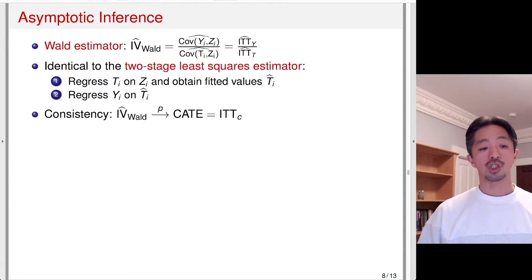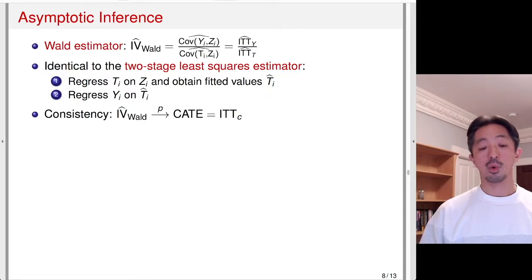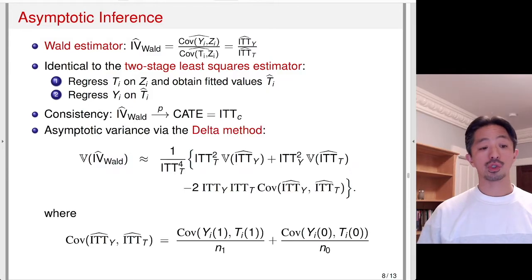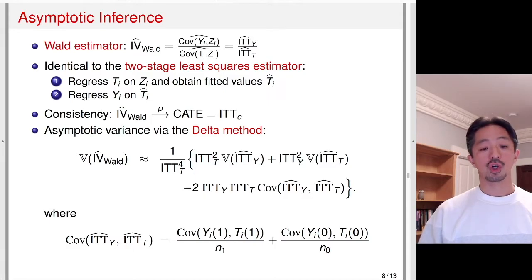We can show that this IV estimator — the Wald estimator — is consistent, converging to the complier average treatment effect, or the ITT effect for compliers. You can also derive the asymptotic variance using the delta method. The formula is a little complicated, but each of the terms can be estimated from the data consistently.